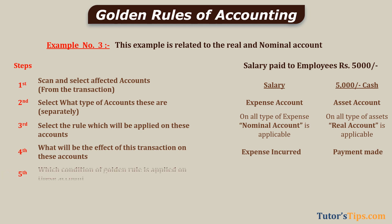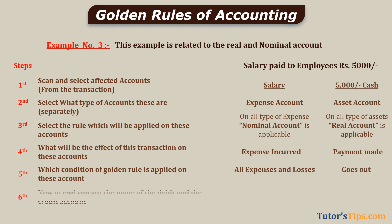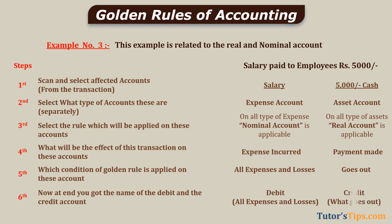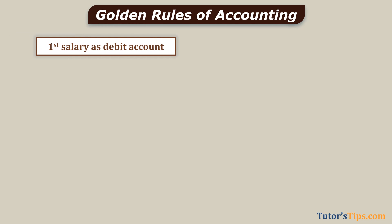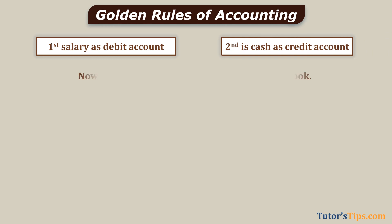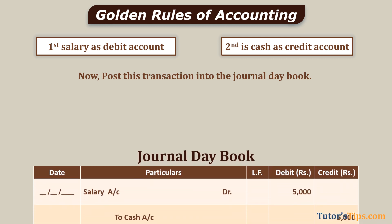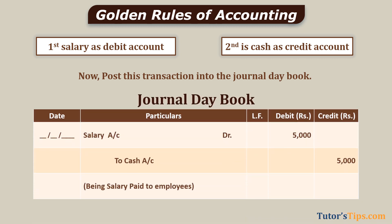Step five: which condition of the golden rule applies? All expenses and losses — and cash goes out. Step six: debit all expenses and losses; credit what goes out. After completing this six-step process, we get: salary account as the debit account and cash account as the credit account. Post this transaction into the Journal Day Book. The journal entry will be read as: Salary Account debit to Cash Account.